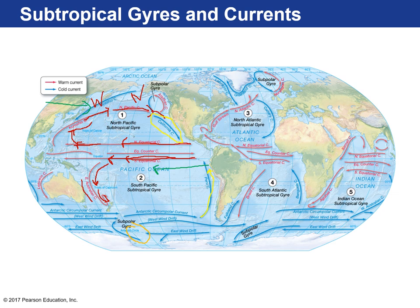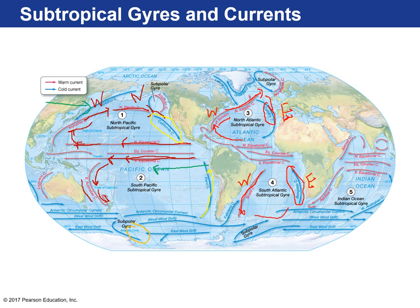The Gulf Stream moves across the North Atlantic, reaches Europe, turns southward and becomes the Canary Current — a very cold eastern boundary current on the eastern boundary of the ocean basin. Here's the eastern boundary current of the South Atlantic subtropical gyre, and the western boundary current moving southward completing the gyre.